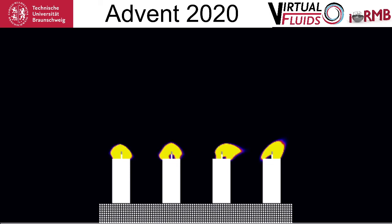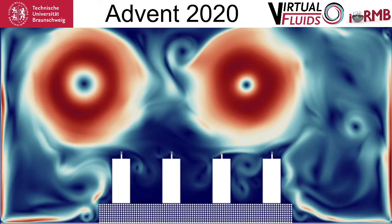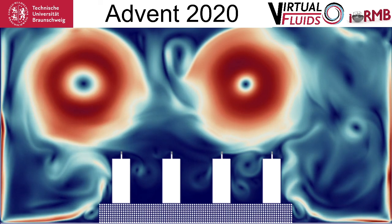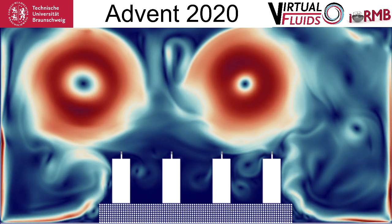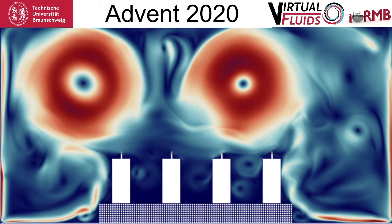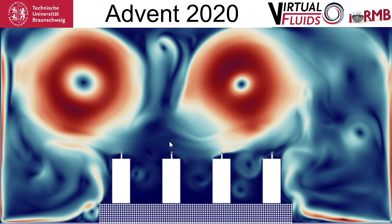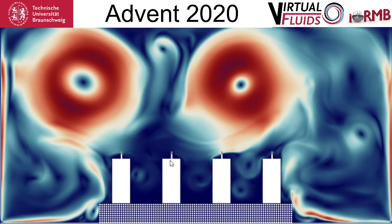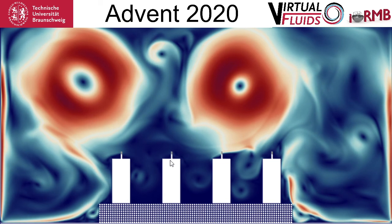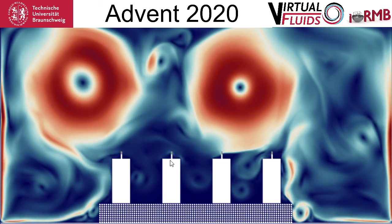The reason why the flames deform that much is because there is movement going down. This is the velocity — you can see there are two big vortices, and the flow goes down in between these two vortices. This happens of course because it's a two-dimensional flow.